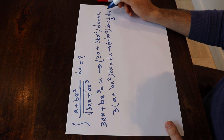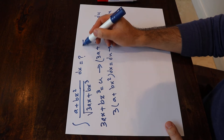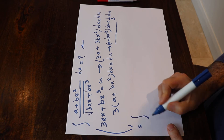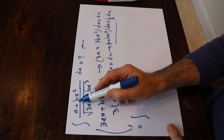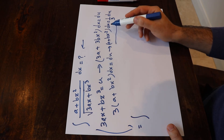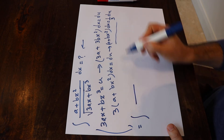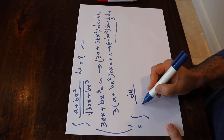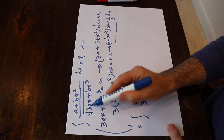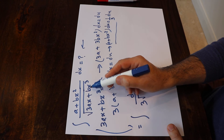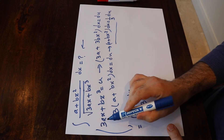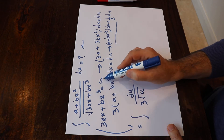So if you now substitute this expression into the integral and rewrite it, instead of (a + bx²) times dx, I can simply write du divided by 3. And instead of the square root of 3ax + bx³, I can write the square root of u, because 3ax + bx³ is defined as u.